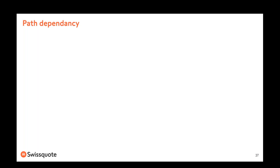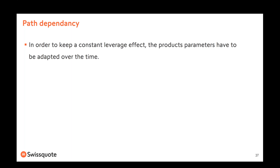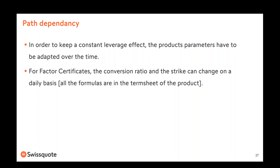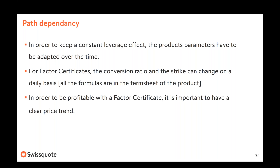To send an order, click on 'Trade' and you get the order mask. Select the quantity, order type — limit, stop, or OCO — and the price, unless you choose market price, and then the validity of the order. In order to keep a constant leverage effect, the product's parameters have to be adapted over time. For factor certificates, the conversion ratio and the strike can change on a daily basis, with all formulas in the term sheet.